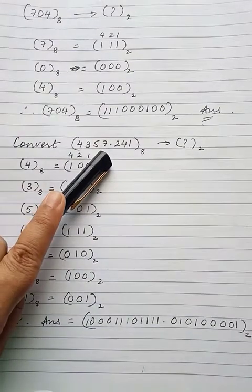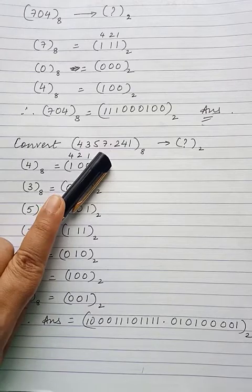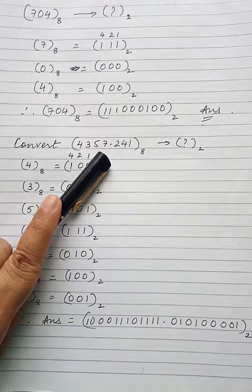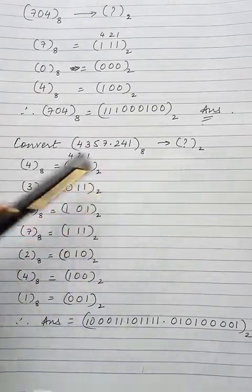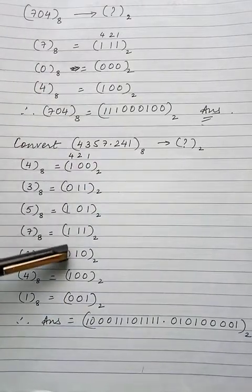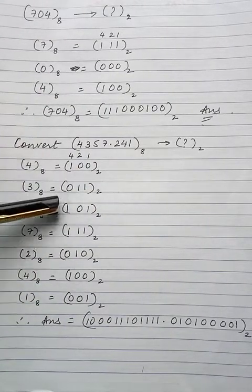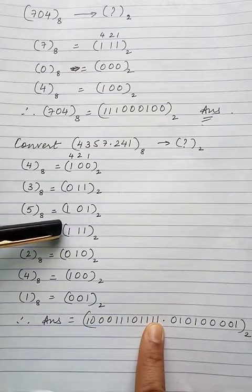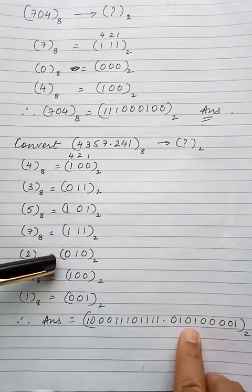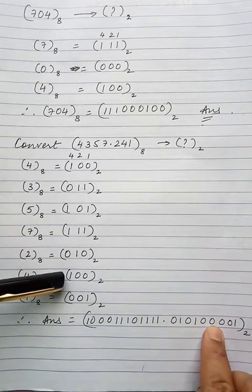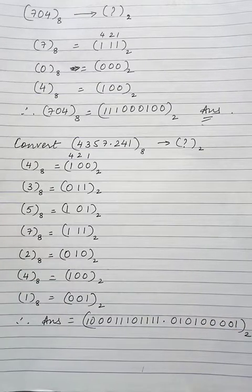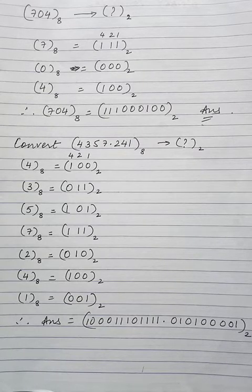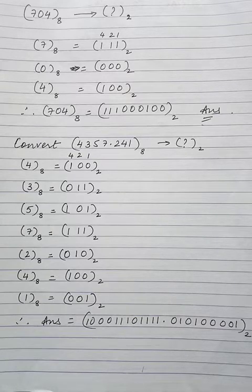Now take a number with a fractional part. This octal number is to be converted into binary. Separate all the digits: 4, 3, 5, 7 before the decimal point and 2, 4, 1 after. Find the 3-bit binary equivalent of each digit. Write the results together with the decimal point in the same position. For example, 4 = 100, 3 = 011, 5 = 101, 7 = 111, then the decimal point, 2 = 010, 4 = 100, 1 = 001. This is the final answer. I hope you understood how to convert an octal number directly into binary without the intermediate decimal conversion.